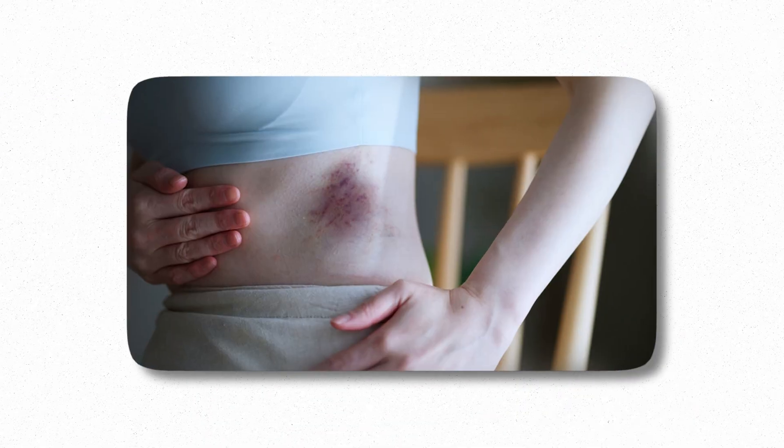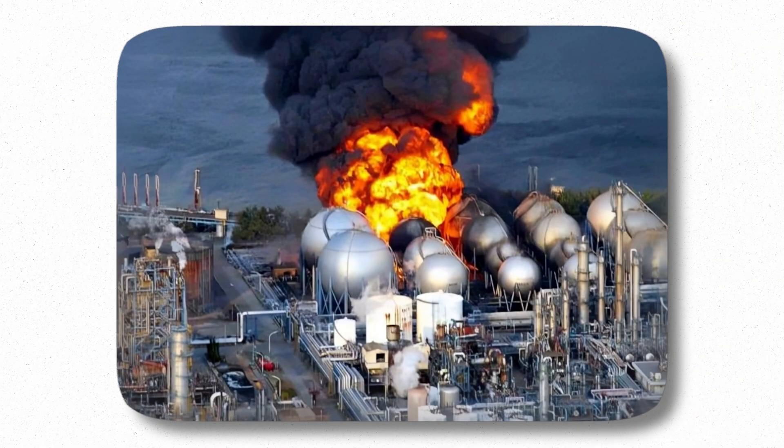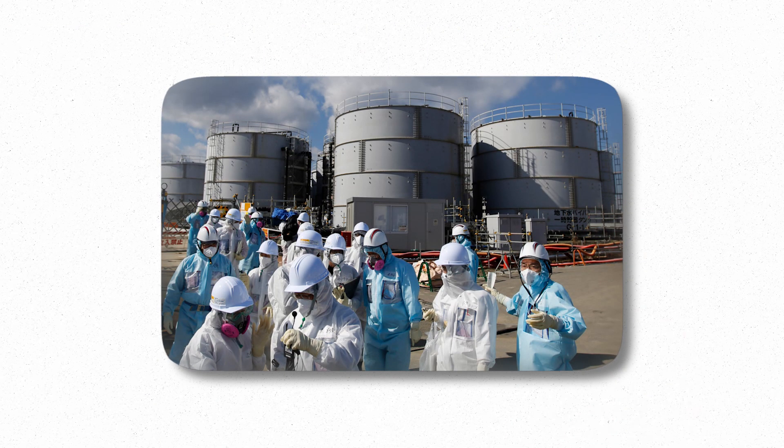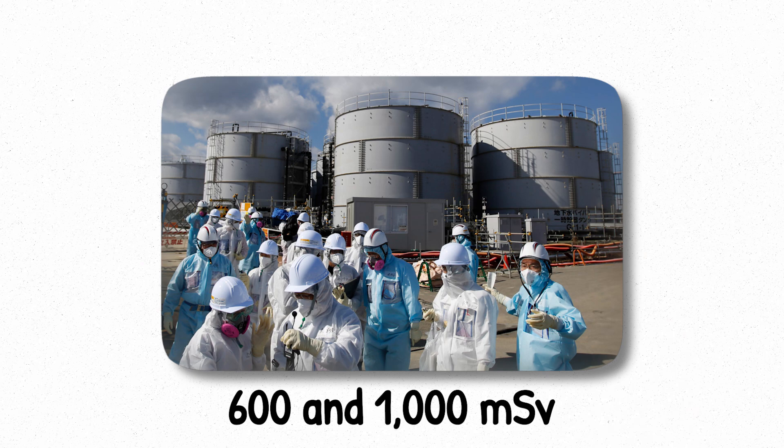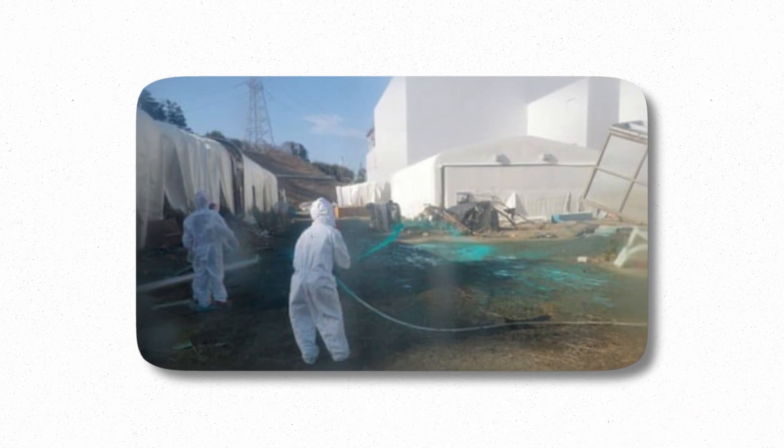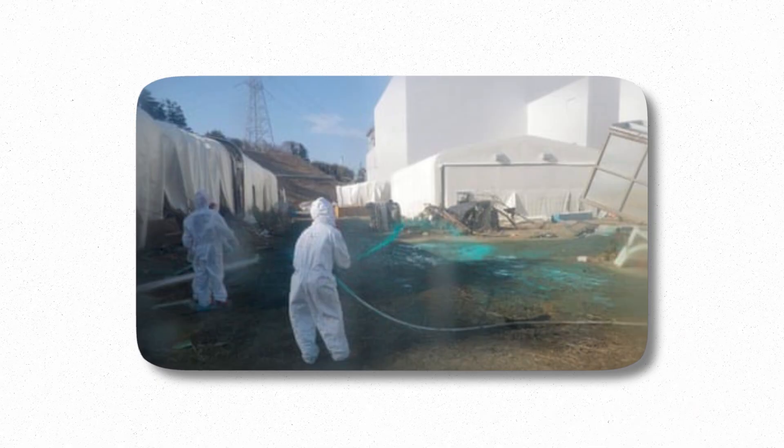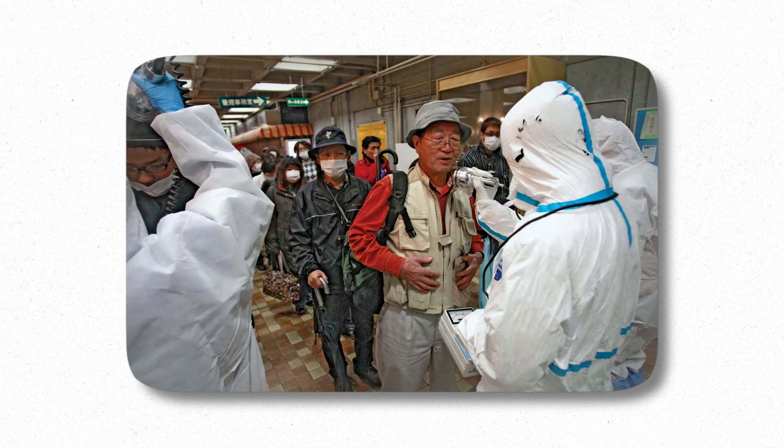Nausea, vomiting, weakness, and in some cases, internal bleeding. One vivid example comes from the Fukushima Daiichi disaster. Several plant workers received exposures between 600 and 1,000 millisieverts during emergency containment operations. They didn't collapse on the spot, but over the following days, their blood counts dropped. And recovery required months of monitoring and care.